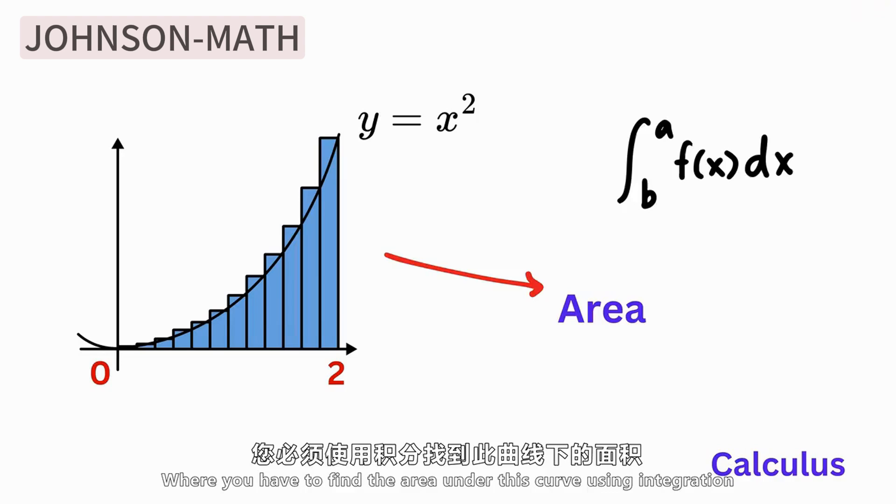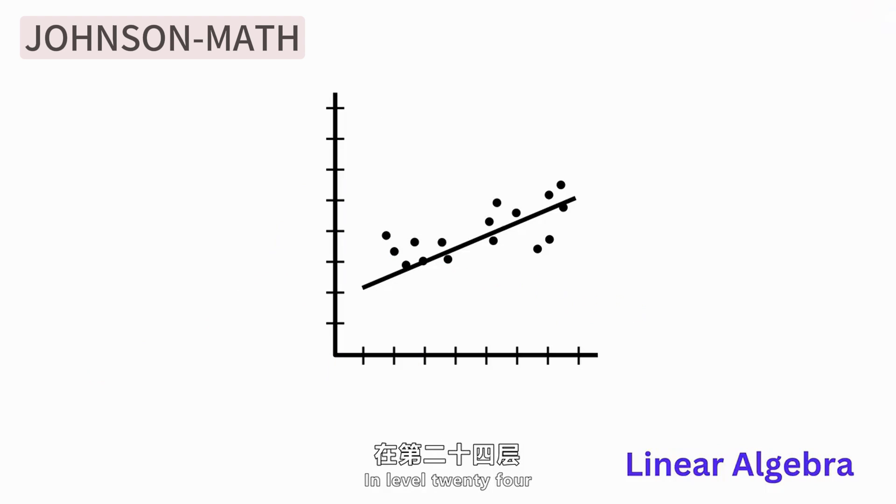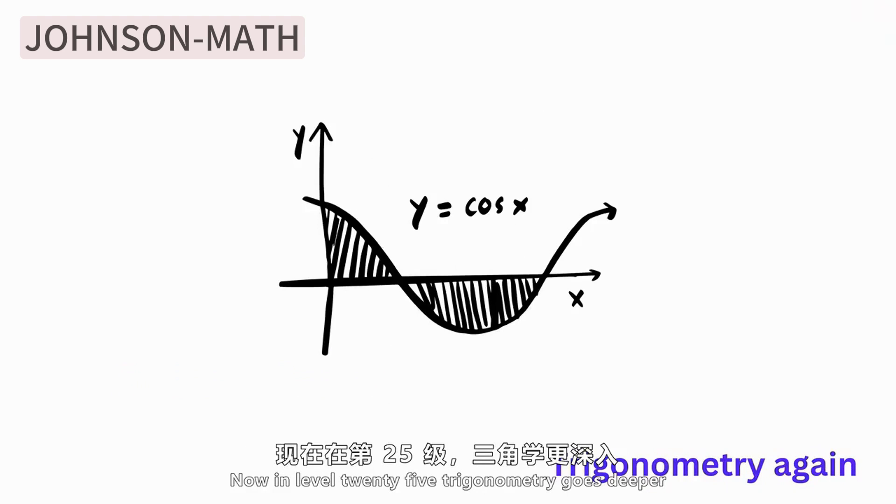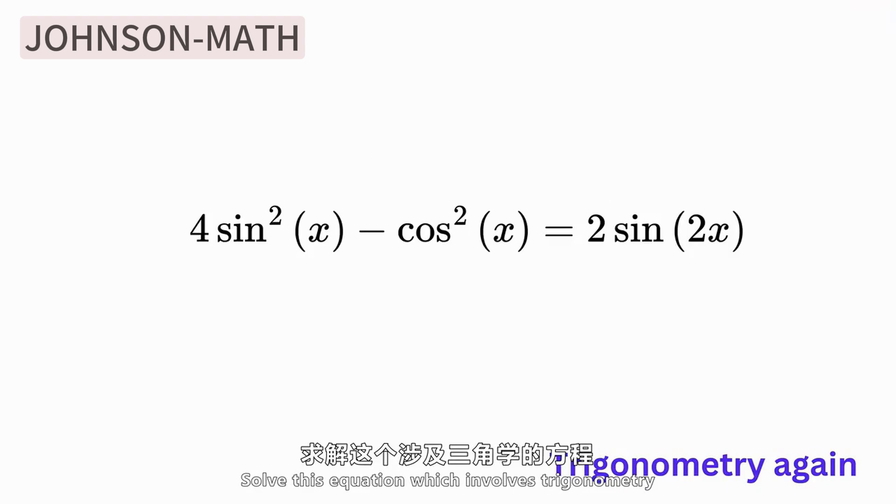Level 24 starts to involve linear algebra. Can you find the determinant of this 3 times 3 matrix? Now Level 25 goes a little deeper into trigonometry. Solve this equation involving trigonometric functions.